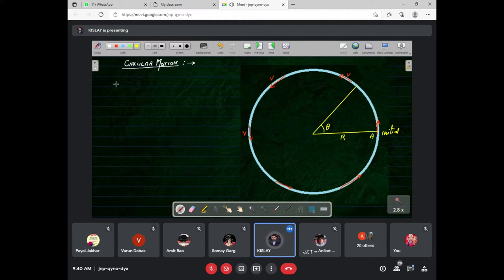Acceleration means when an object is in circular motion, the object is changing its angle at the center. Suppose this is the initial position I have taken - this point is A. An object comes here in time t, this angle is theta, and radius is r. Try to understand the basic things.